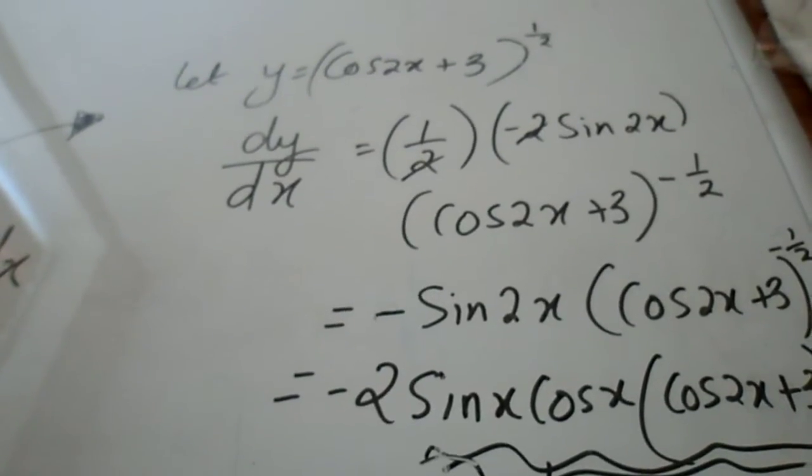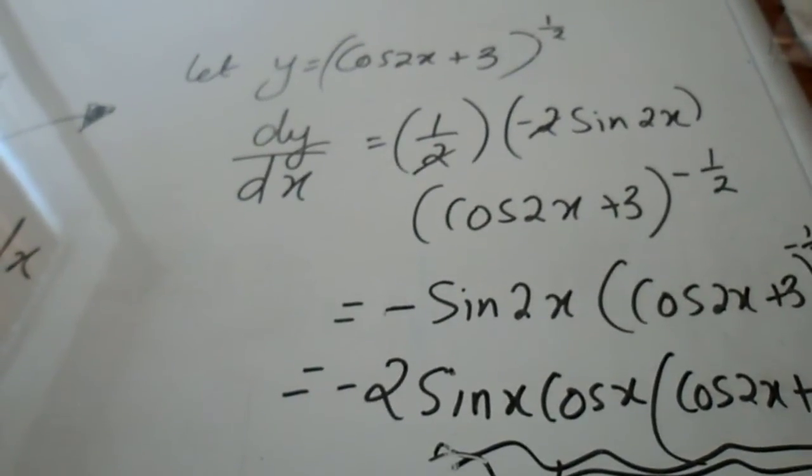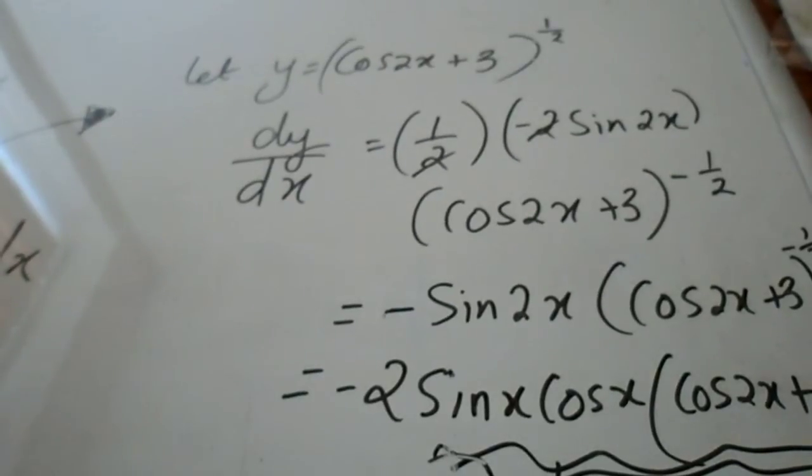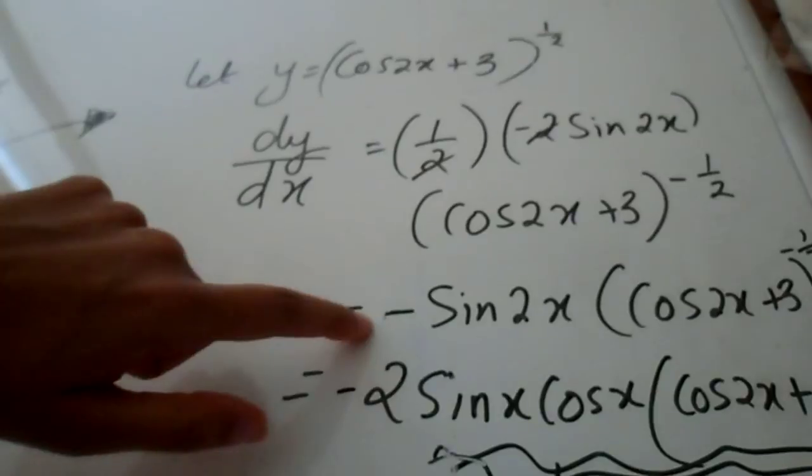Now we know that we can open sin 2x by using the double angle formula. So when you open sin 2x up you get 2 sin x cos x cos 2x plus 3 to the power of minus half. So do not forget there's a minus here.